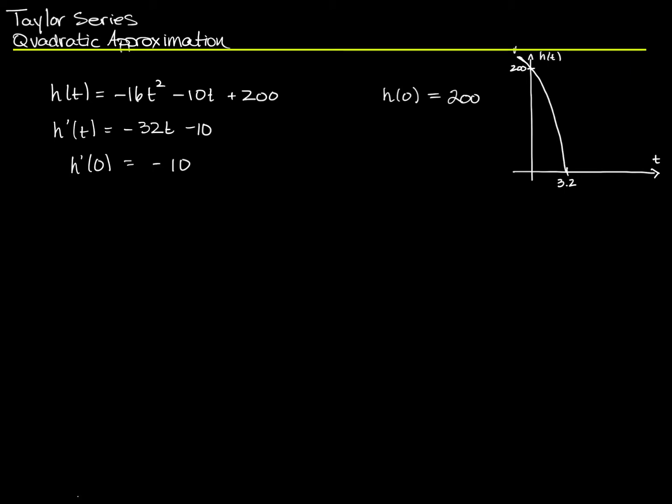Knowing that velocity is the first derivative of position, I get h'(t) = -32t - 10. And the velocity at time 0 is going to be equal to negative 10. So I know that at time 0, when I plug 0 in for t, I'm going to be left with just negative 10. So that's my initial velocity. Let's put that over here as well. Initial position is 200, initial velocity is negative 10.